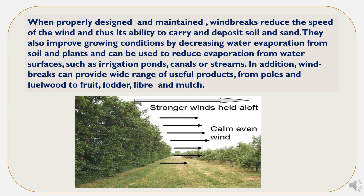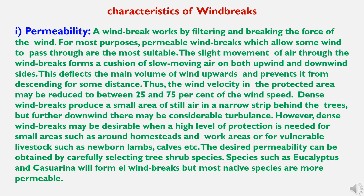When properly designed and maintained, windbreaks reduce the speed of wind and thus its ability to carry and deposit soil and sand. They also improve growing conditions by decreasing water evaporation from soil and plants, and can be used to reduce evaporation from water surfaces such as irrigation ponds, canals, or streams. In addition, windbreaks can provide a wide range of useful products from poles and fuel wood to fruit, fodder, fiber, and mulch.